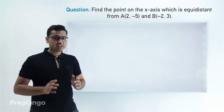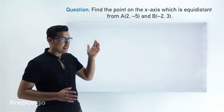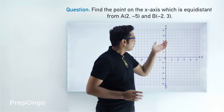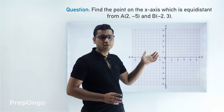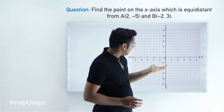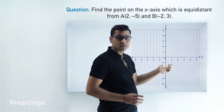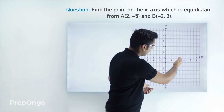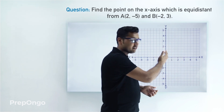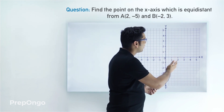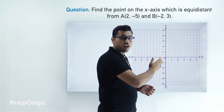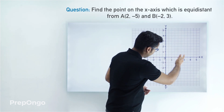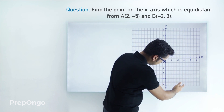Before proceeding, let us first plot these points A and B onto the graph. Here's a graph and we'll plot the points. Point A is (2, -5), so 2 means it is at a distance of two units from the origin on the x-axis. Then -5 means it is at a distance of 5 from the origin in the negative y-axis direction, so we move down five points.